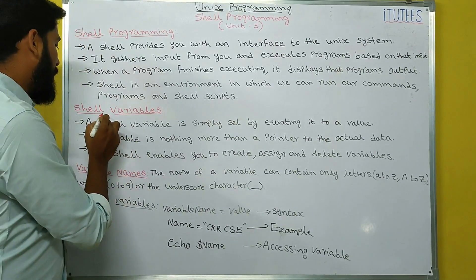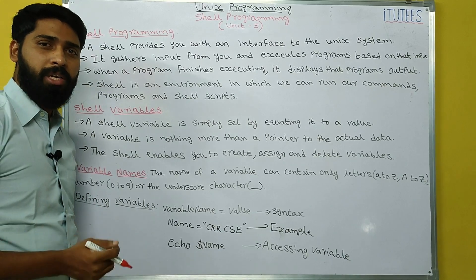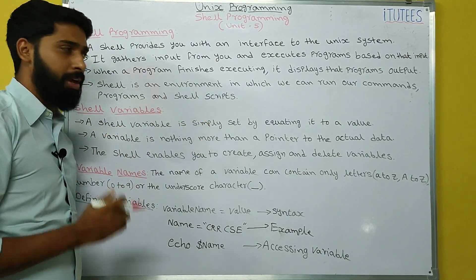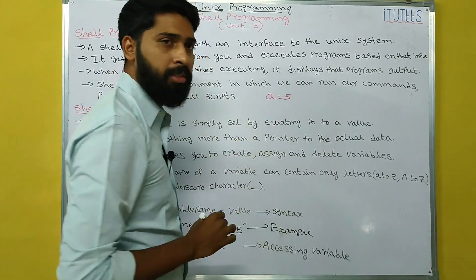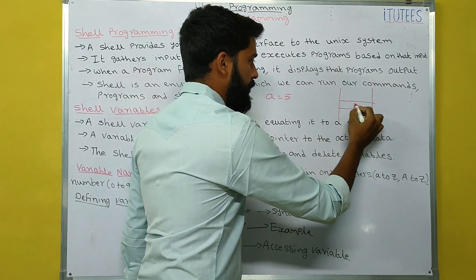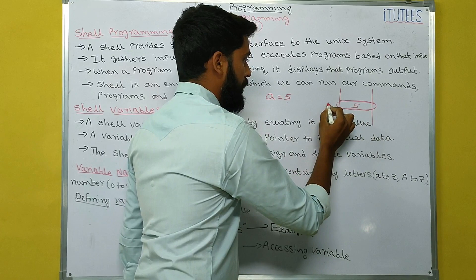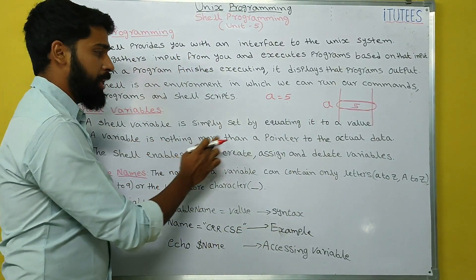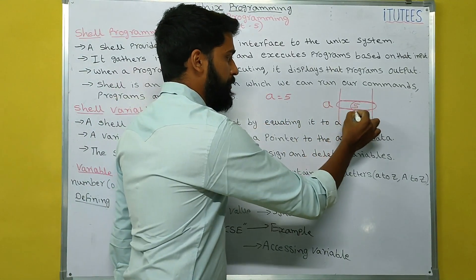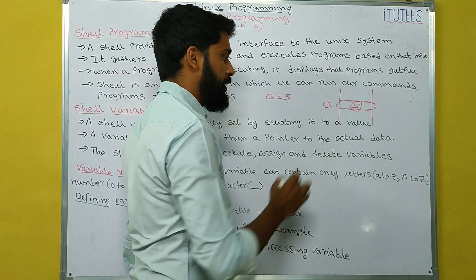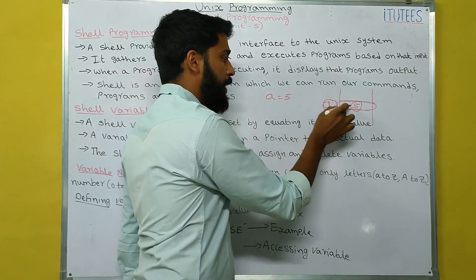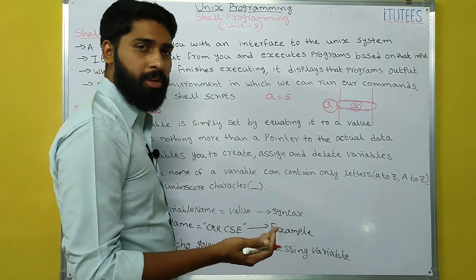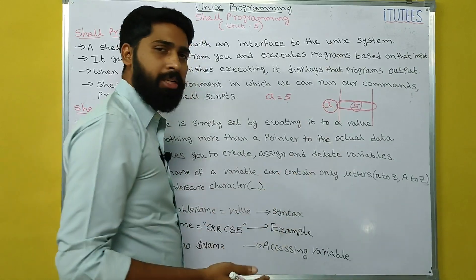First we are going to see shell variables. What is a variable? A variable is a storage location in the memory. A shell variable is simply set by equating it to a value — for example, a equals to 5. That means a is stored in memory, and a is the identifier pointing to that location. A variable is nothing more than a pointer to the actual data, which here is 5. The shell enables you to create, assign, and delete variables.